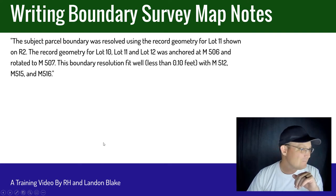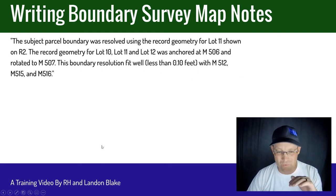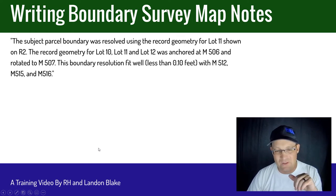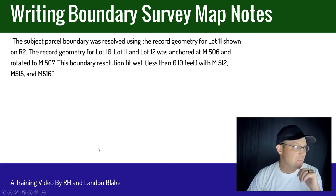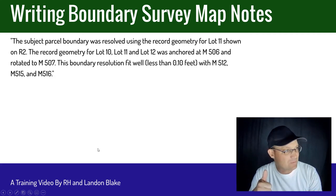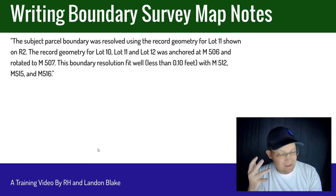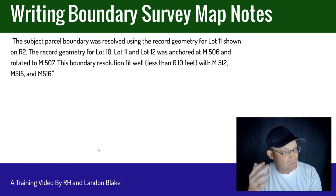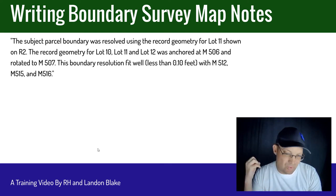Let's look at an example. This is a type 1 note, where we were able to hold the record geometry of a controlling document and it fit well with the physical evidence on the ground. The subject parcel boundary was resolved using the record geometry for Lot 11 shown on R2 — that's the source document. The record geometry for Lots 10, 11, and 12 was anchored at M506 — that's the anchor point — rotated to M507, the rotation point. This boundary resolution fit well, less than a tenth of a foot, with M512, M15, and M516 — those are the checkpoints.